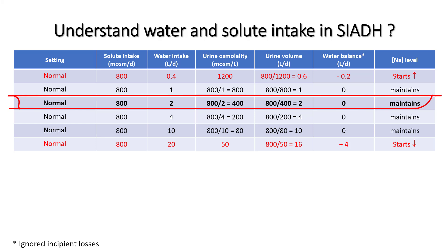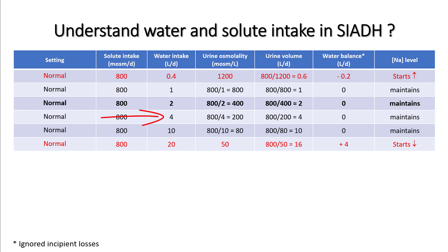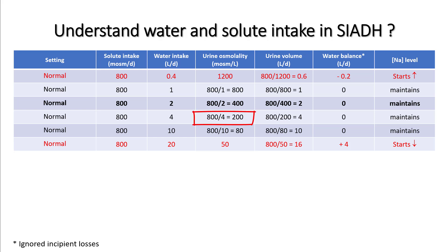We'll take an example of a normal person eating an 800 mOsm diet and drinking two liters of water. Since intake and output will be matched, he will make two liters of urine at a urine osmolality of 400, and his sodium will be maintained. If he drinks four liters, urine volume becomes four liters and urine osmolality drops to 200 — sodium still maintained.